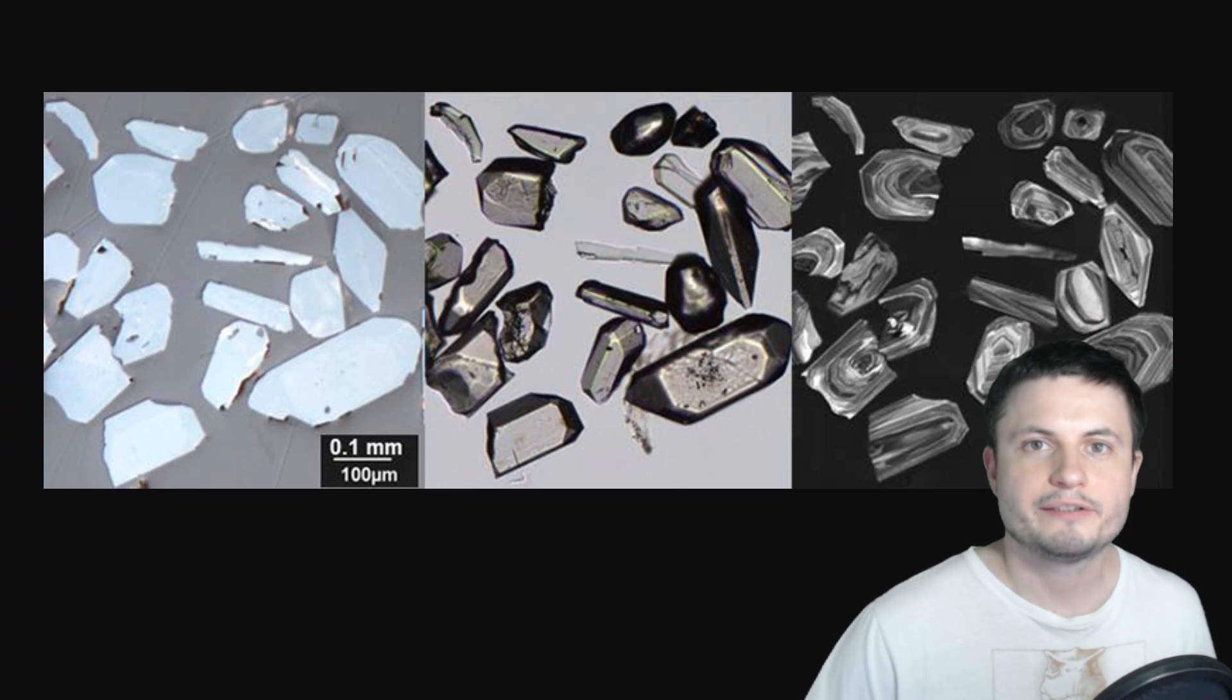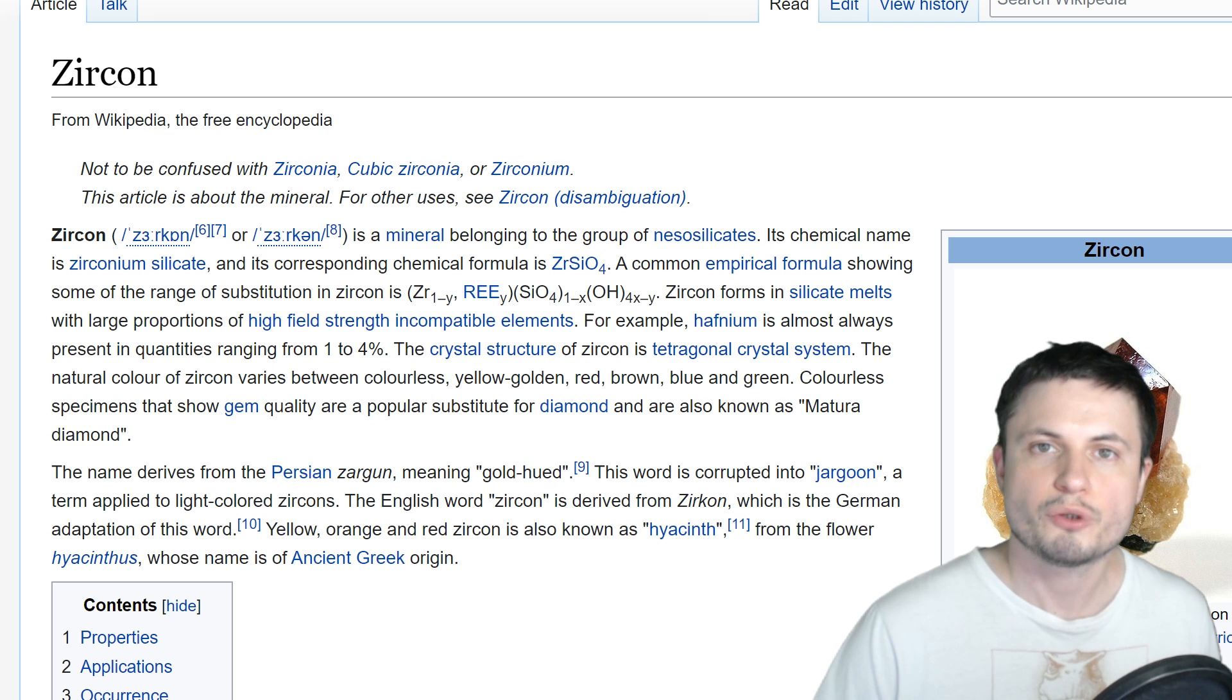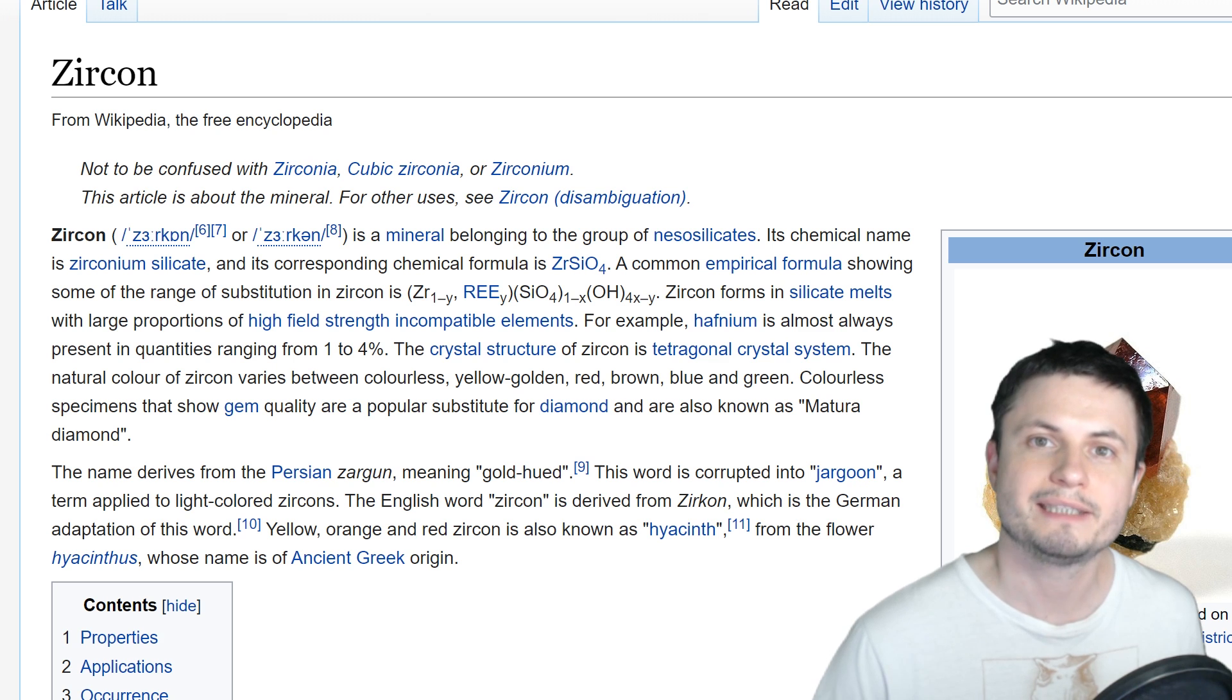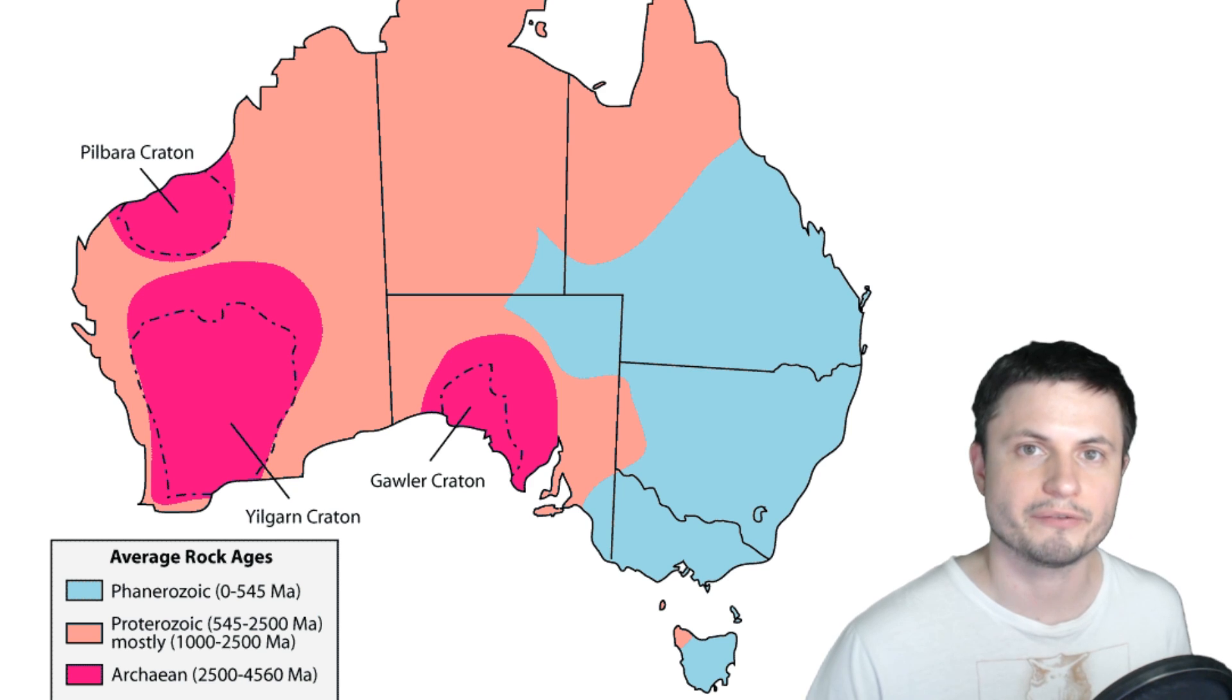Well for this particular study these scientists used really really tiny rocks, very ancient rocks from Australia known as zircon. These rocks are actually used in a lot of different applications but for this particular study they wanted to find some of the oldest rocks on the planet and it just so happens that Australia is really rich in these different deposits.